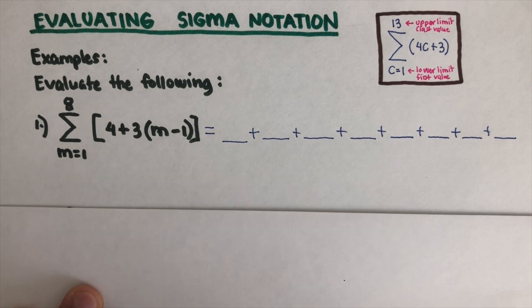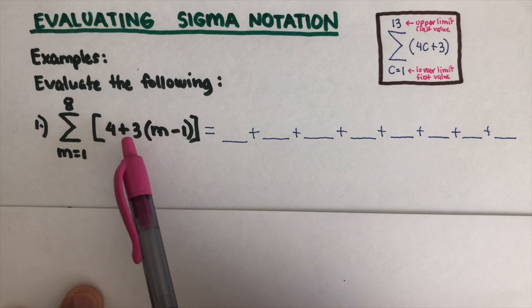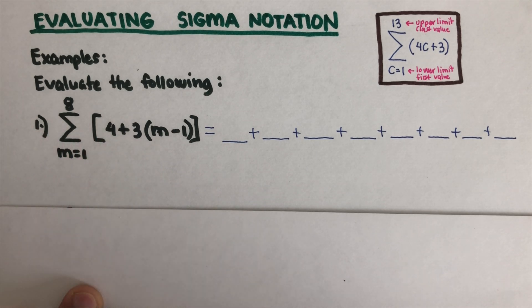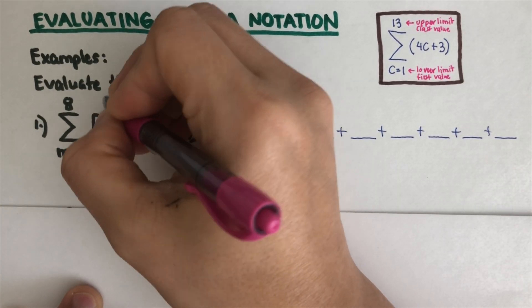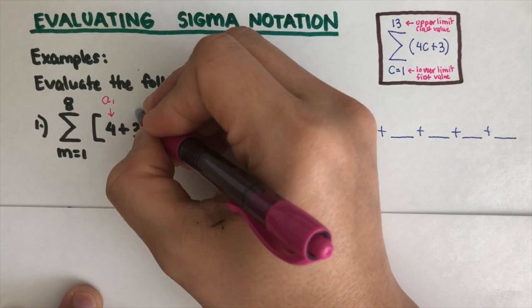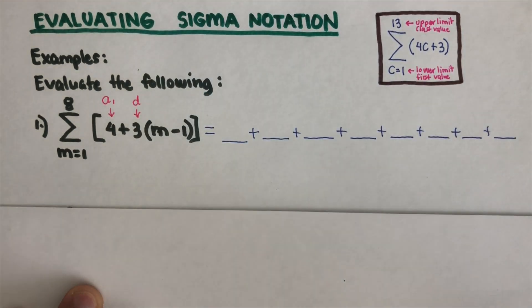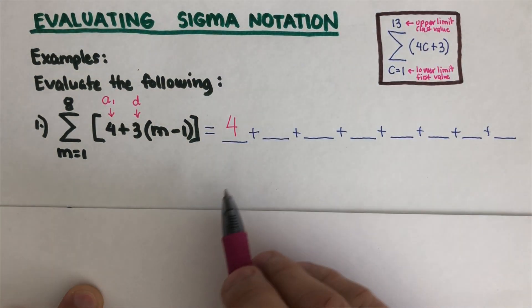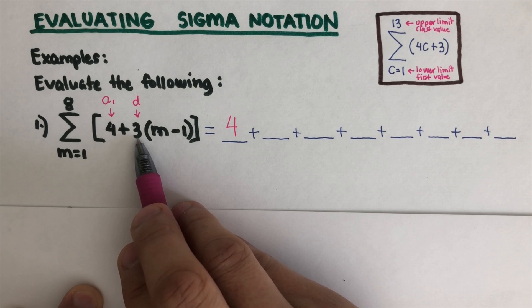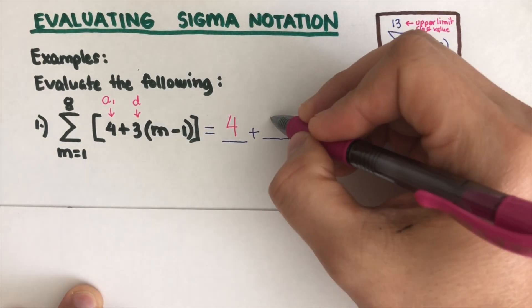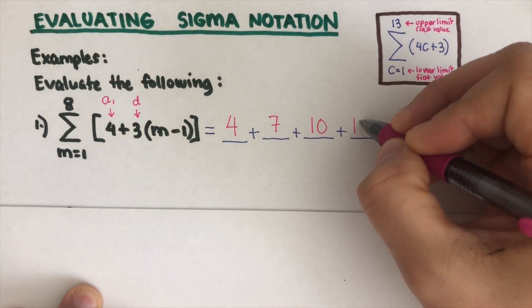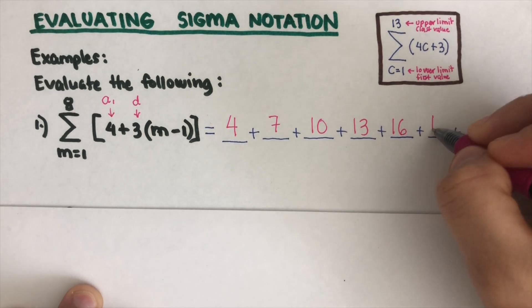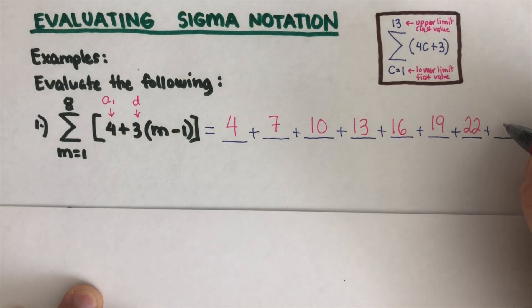Now, what are the ones that we put into these blanks? We know that this is our first term, so this is our a₁ and this is the difference. That means our first term here is 4, and then we keep adding 3 since the difference is 3. So this would be 7, 10, 13, 16, 19, 22, and 25.